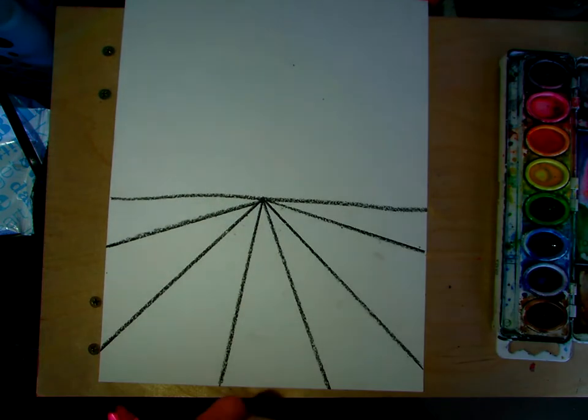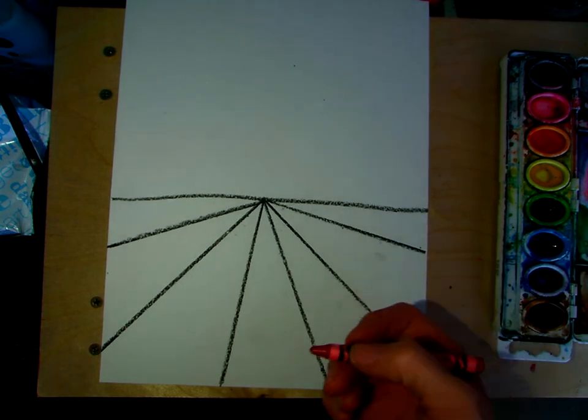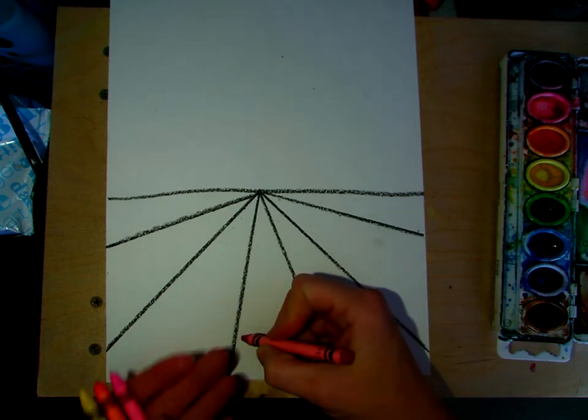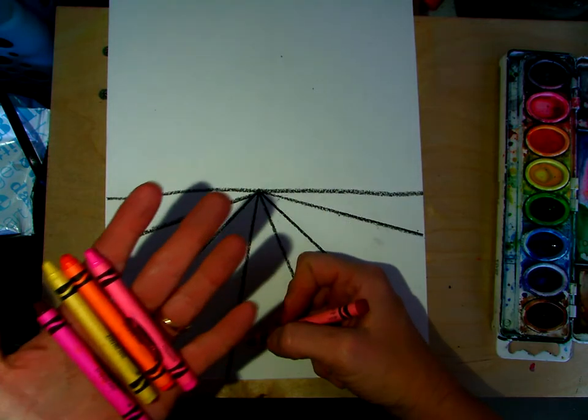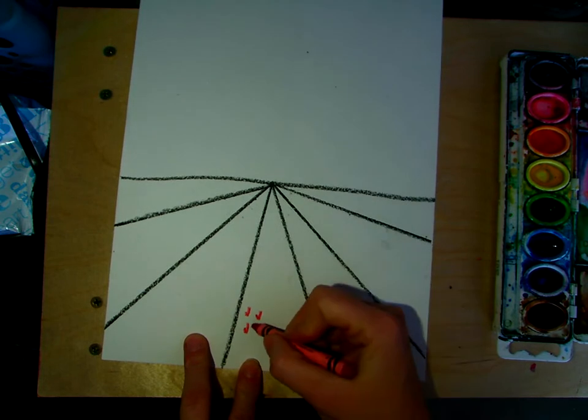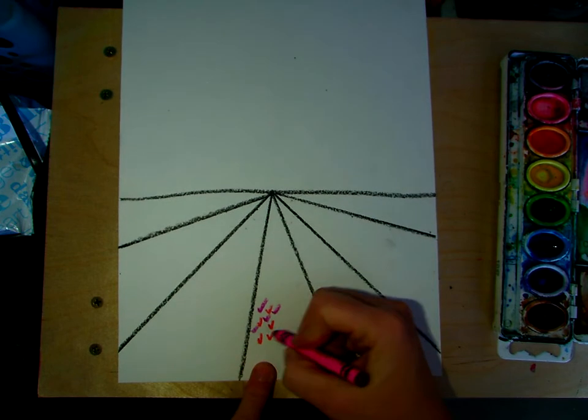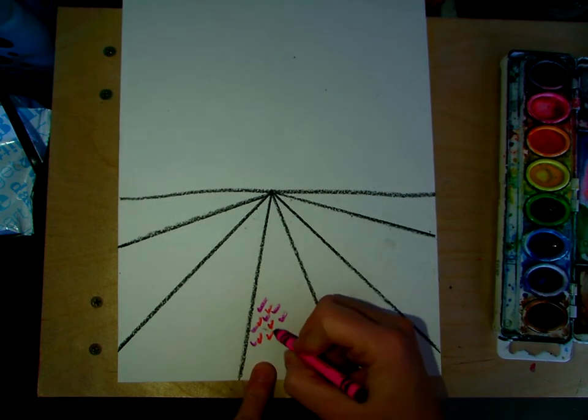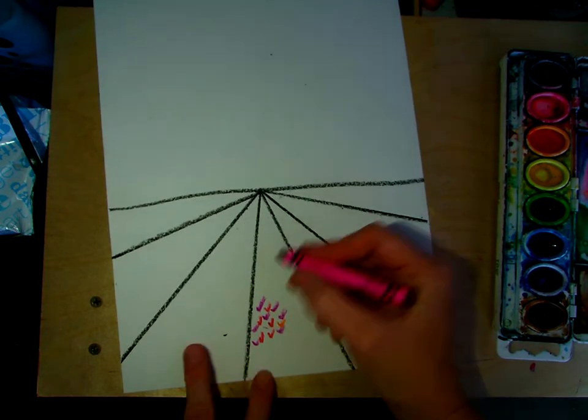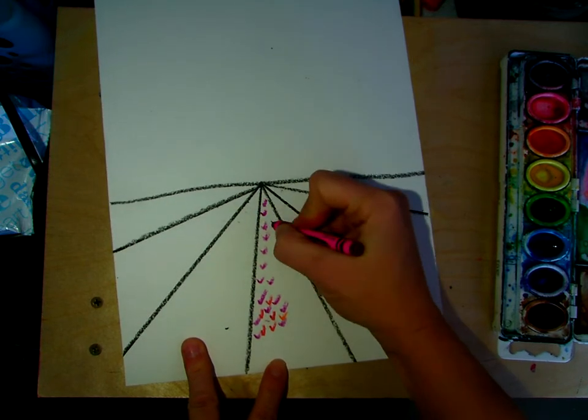What we're going to do for those of us that have limited supplies is we're going to do impressionistic tulips, just like Monet did. I just picked a color palette, a floral color palette, and we're just going to make little U's or V's. We're going to fill up our space and I'm going to mix up the color so that they're not all the same color in one area. I'm going to do a little V all the way up to the tiniest spot.